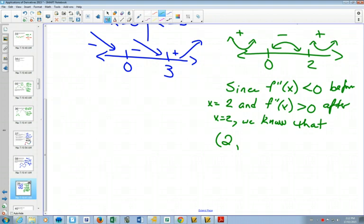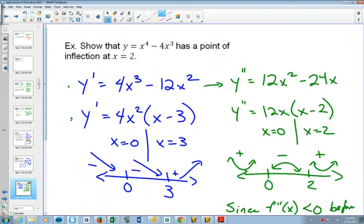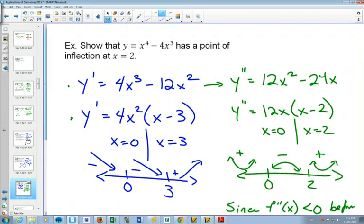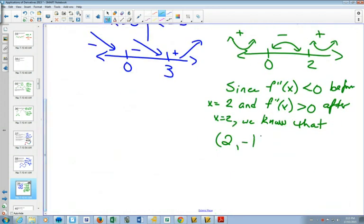anytime you want to find an actual point, where are you going to plug that into? The original function. So if we want to find out what that actual point is, we plug it in here. It's going to give us 16 minus 32, which is negative 16. So we know that (2, -16) is an inflection point.